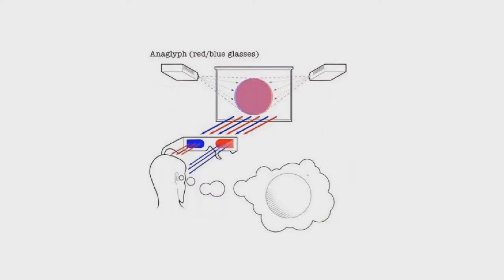Here we have a picture of a person using anaglyph 3D glasses. Basically, one projector shoots a red image to the screen and another projector shoots a blue image to the screen. When the two images reach the person wearing anaglyph 3D glasses, one eye filters out the blue color and the other eye filters out the red color. This allows each eye to see a different image, and the brain interprets the two images as one 3D image.